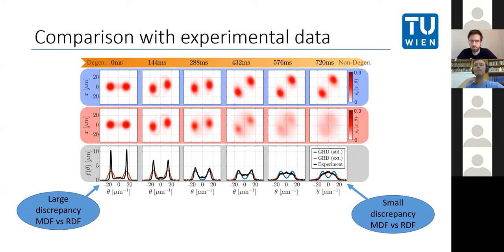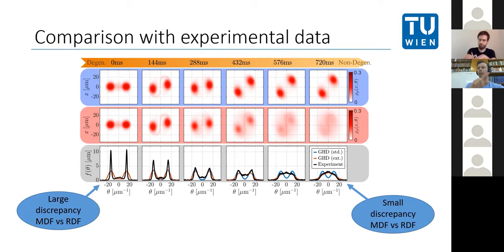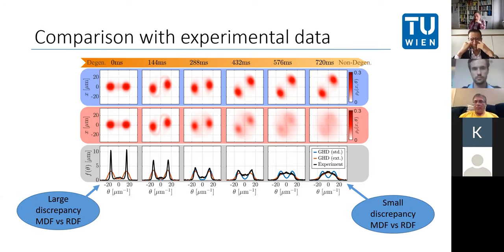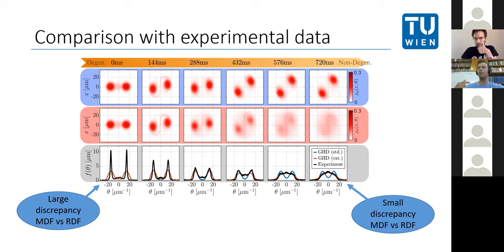A clarifying question: is the gas trapped in an optical lattice? Yes — this is not an atom chip experiment but a rectillinear optical lattice, where two counter-propagating beams create an array of 1D tubes. The harmonic longitudinal confinement comes from the Gaussian intensity profile of the beams themselves. This means the same beams create both transverse and longitudinal confinement, so releasing the longitudinal potential requires releasing everything, causing the gas to expand in 3D and yielding the momentum distribution rather than the rapidity distribution.